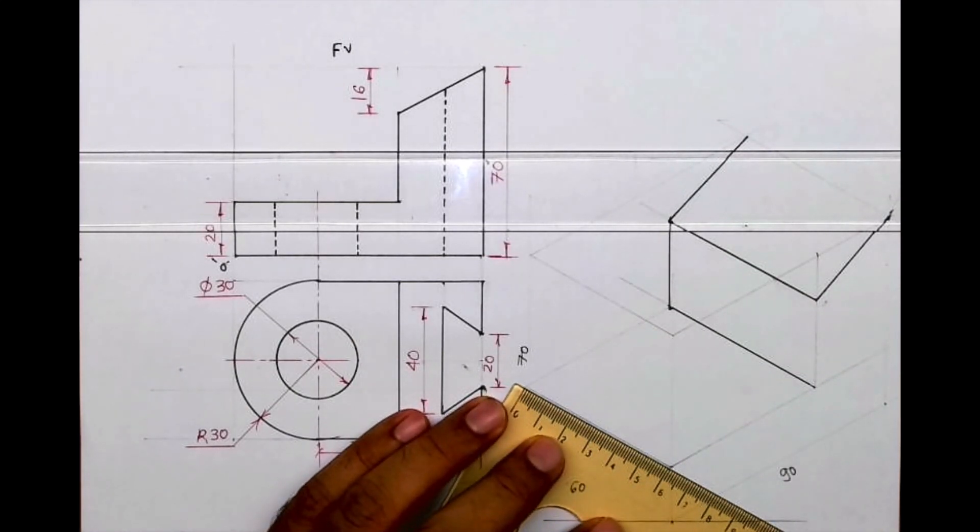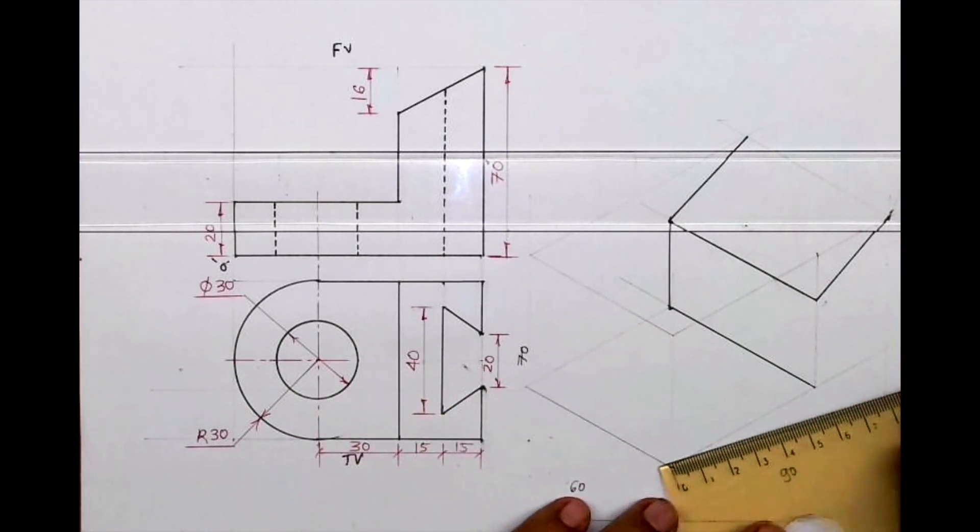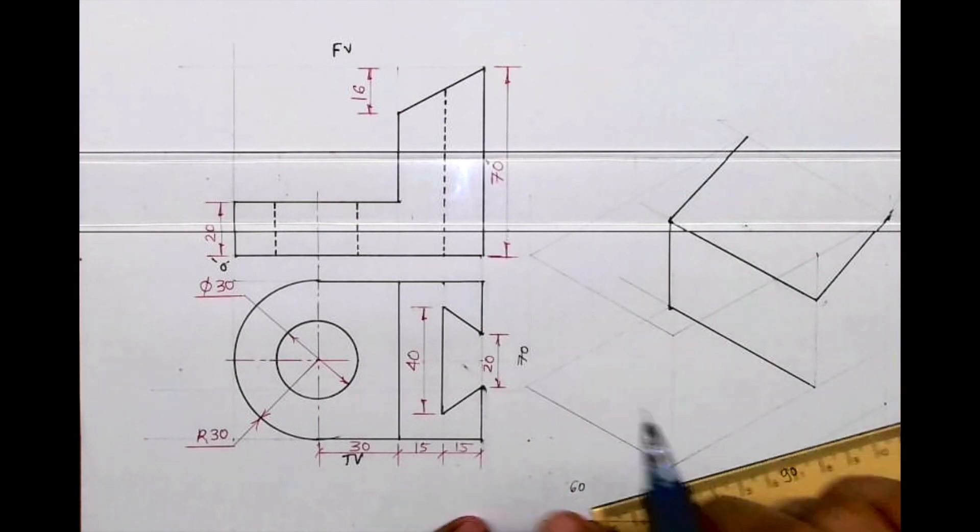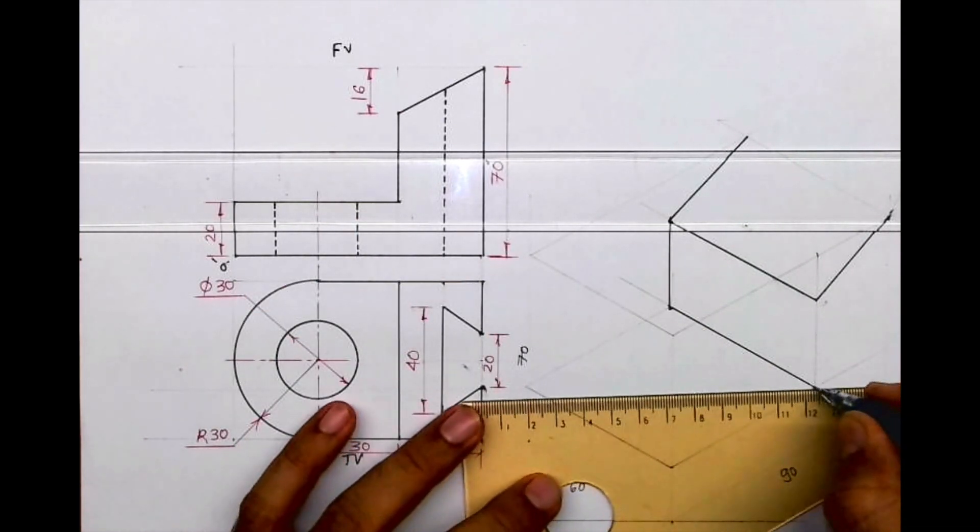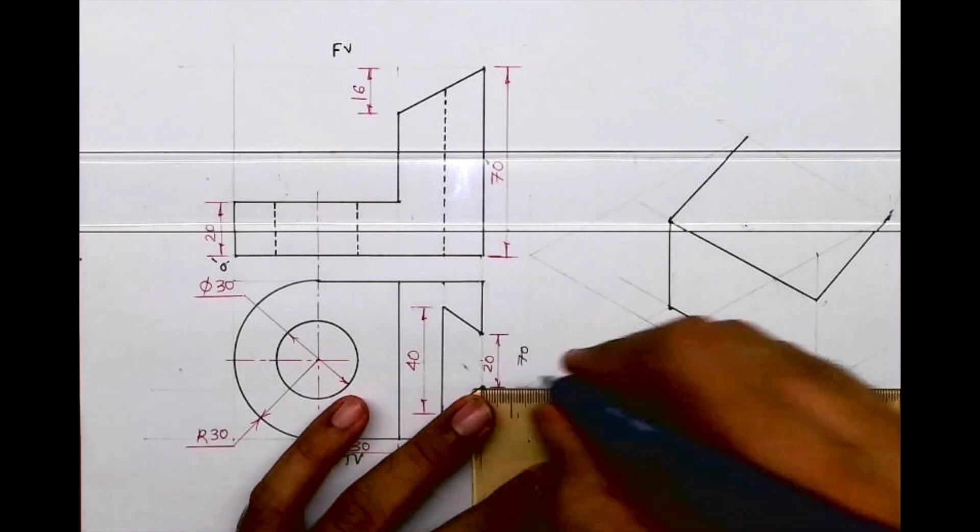Now if you see, this is how much? 60. And this is also 60. We need to draw rhombus of 60 because we want to draw radius 30.